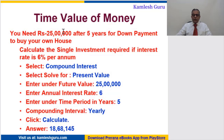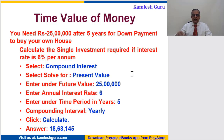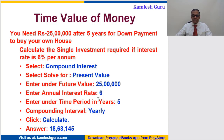Take another example: you need 25 lakh rupees after five years for a down payment to buy your own house. Calculate the single investment required. Select compound interest, solve for present value, enter future value as 25 lakhs, annual interest rate six percent, time period five years, compounded yearly. Click calculate and you will arrive at the amount required — that is 18,68,145 rupees.